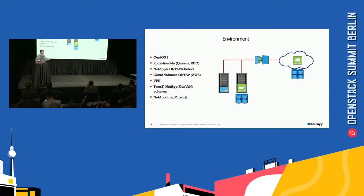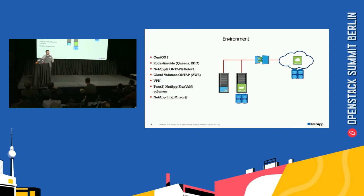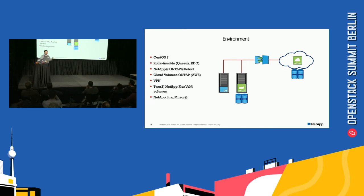My environment: I'm using CentOS 7, Kolla Ansible as my OpenStack deployment method using the Queens release, and Kolla Ansible is using the RDO distribution of OpenStack. I'm using ONTAP Select for my local storage — it's a software-defined storage solution that can install on KVM or ESX. I'm using our cloud solution as my backup replication point. Each site for this single-node setup only needs two volumes: one to store all the OpenStack information, and one as my Cinder backend. This does work with massive multi-node environments — you just add one extra volume for each individual node to hold its individual configuration.